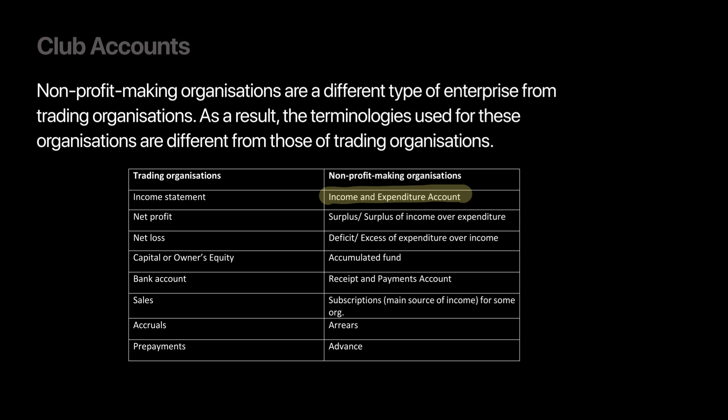There will be no such word as profit or loss, or net profit or loss for the club. Rather than that, we will use words such as surplus of income or deficit of income over expenditure. The word capital or equity will be replaced since there is no owner, and the new word we will use is called accumulated fund. For the bank account, we will now use the word receipt and payment — it essentially replaces the word bank account.